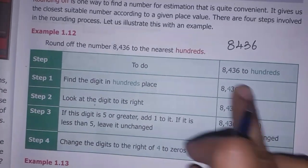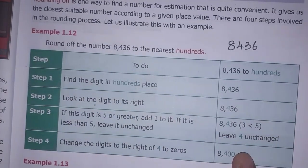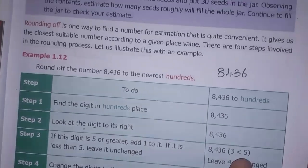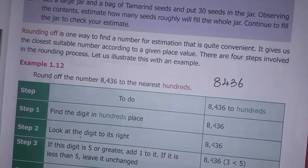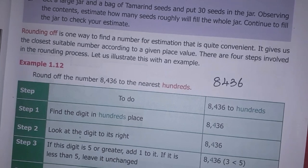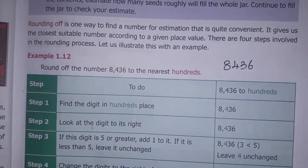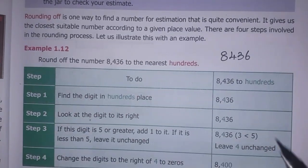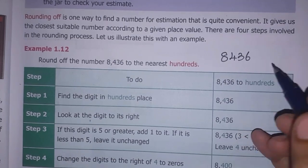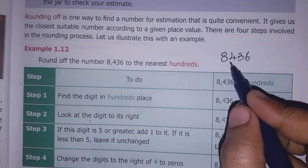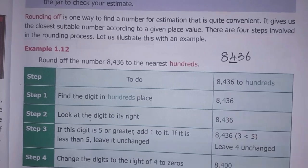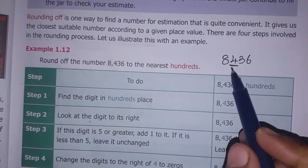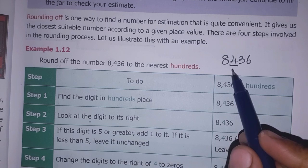There are various steps that we can follow. I am going to explain the number directly. I'm going to round off the number to the hundreds place. We will underline the digit in the hundreds place.